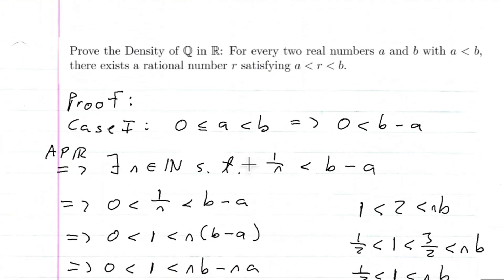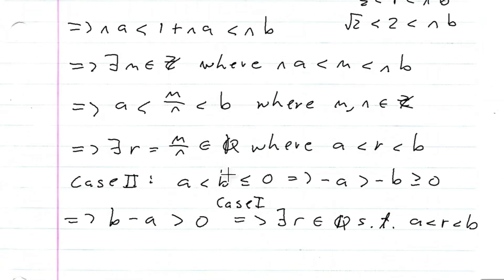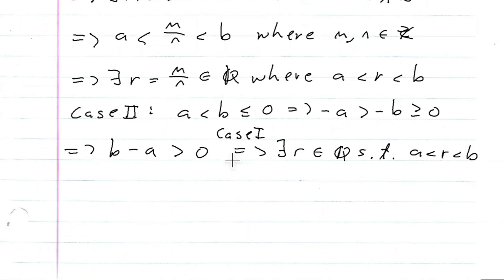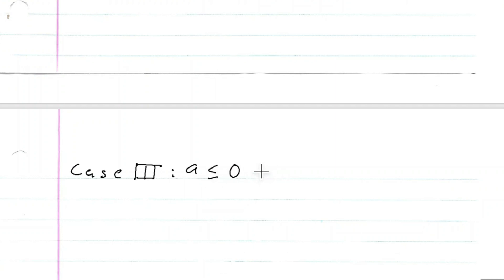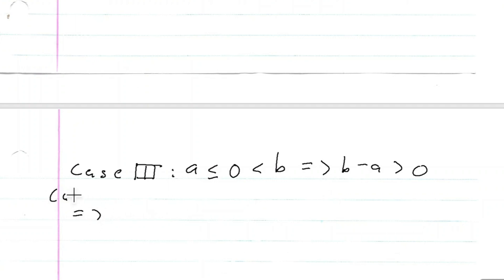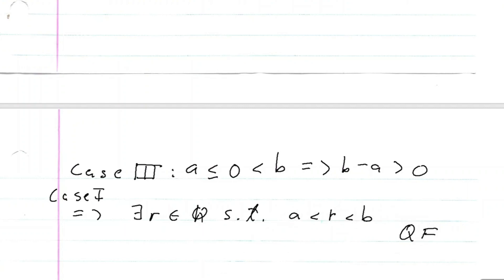Now Case 3 — the last case. In Case 1 we saw when a and b were positive, with a possibly zero. In Case 2 we handled when a and b were both negative, or b equal to zero. In this one, if b is positive and a is negative — so a ≤ 0 < b — then b - a is surely bigger than zero, since subtracting a negative number is definitely positive. And then it's the same as Case 1 again, which implies there exists an r contained in the rationals such that a < r < b. And that is our proof.